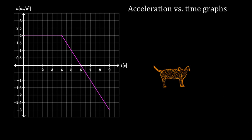I want to talk about acceleration versus time graphs, because as far as motion graphs go, these are probably the hardest. One reason is because acceleration is naturally an abstract concept for a lot of people to deal with. And now it's a graph, and people don't like graphs either.